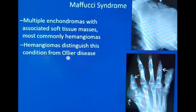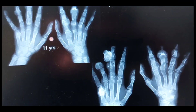Maffucci syndrome is characterized by multiple enchondromas associated with soft tissue masses, most commonly hemangiomas. These hemangiomas distinguish this condition from Ollier disease, which does not have hemangiomas. In Maffucci syndrome there are soft tissue masses, mainly hemangiomas. On this image you can appreciate multiple enchondromas with calcified hemangiomas within the soft tissue — the characteristic finding of Maffucci syndrome that makes it distinguishable from Ollier disease.